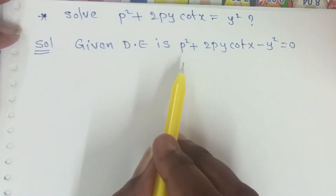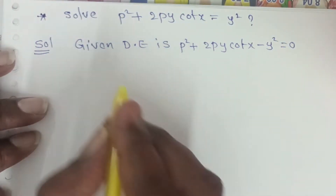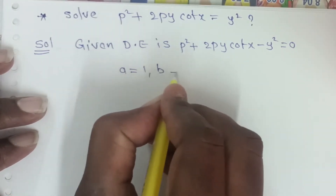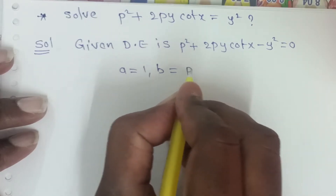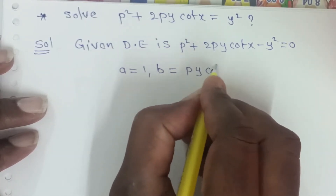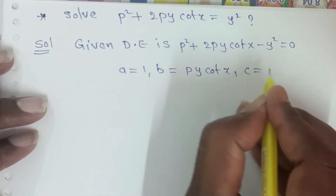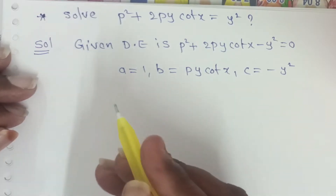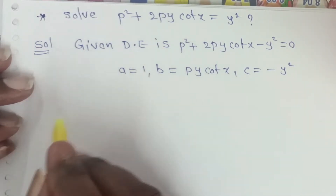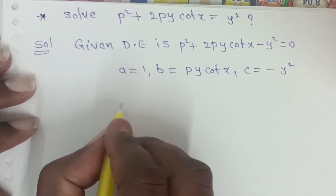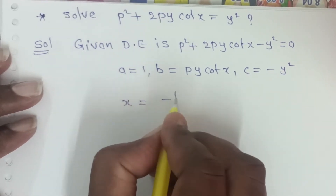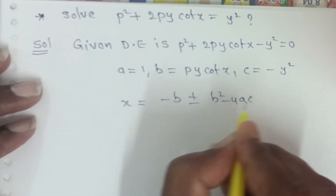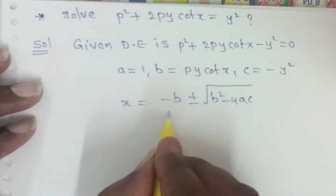This is a quadratic equation in terms of P. So here A is equal to 1, B is equal to 2y·cotX, and C is equal to minus y².